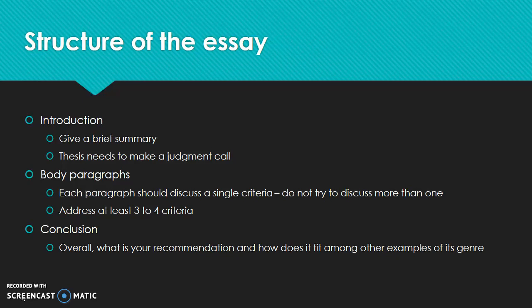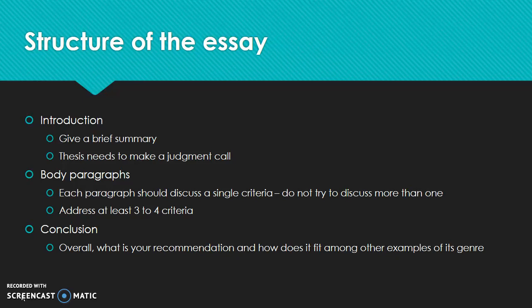In your body paragraphs, each paragraph should discuss a single criteria. So for example, using the example of the film, you may discuss the plot in one paragraph and how the plot contributes to the success of the film. You may end up writing two paragraphs about that if you have a lot to say. But I don't want you to discuss more than one criteria in a single paragraph — if you're doing that, you're probably not spending enough time on each one to really illuminate your argument. Overall, you should be discussing at least three to four criteria, such as plot, dialogue, the actors, and the soundtrack.